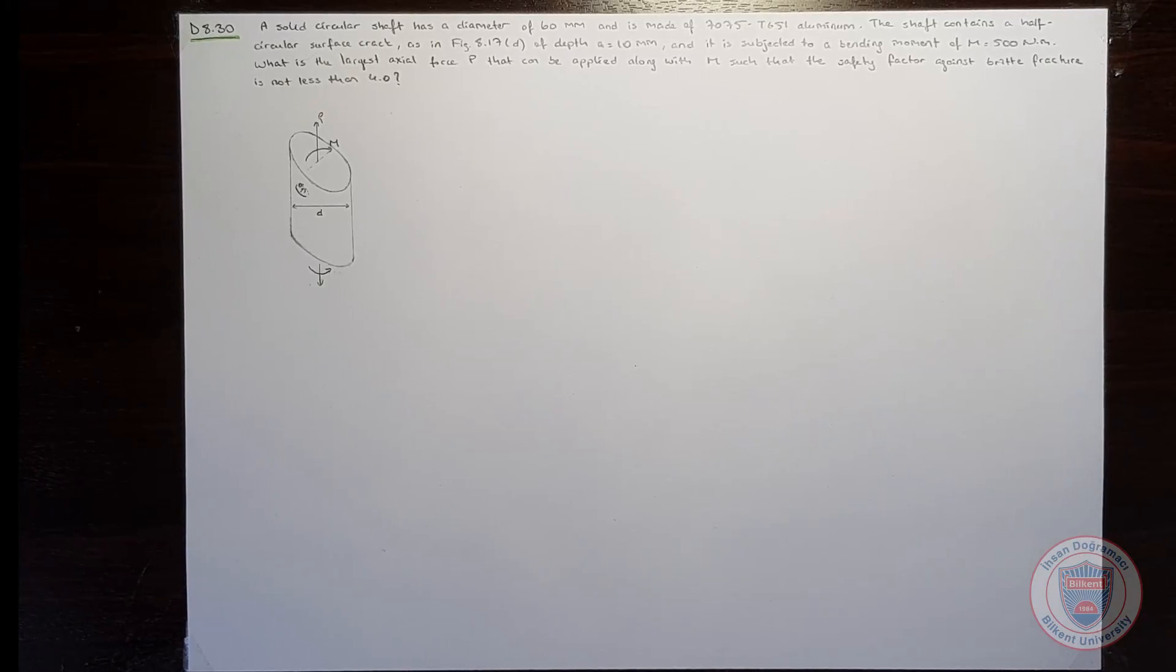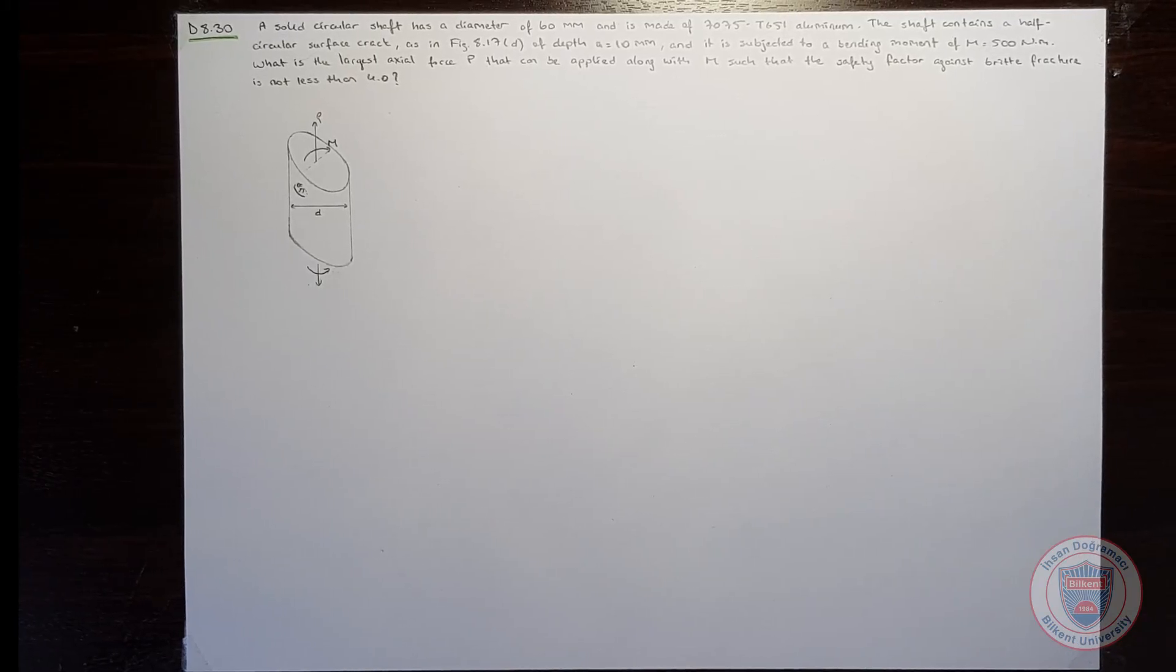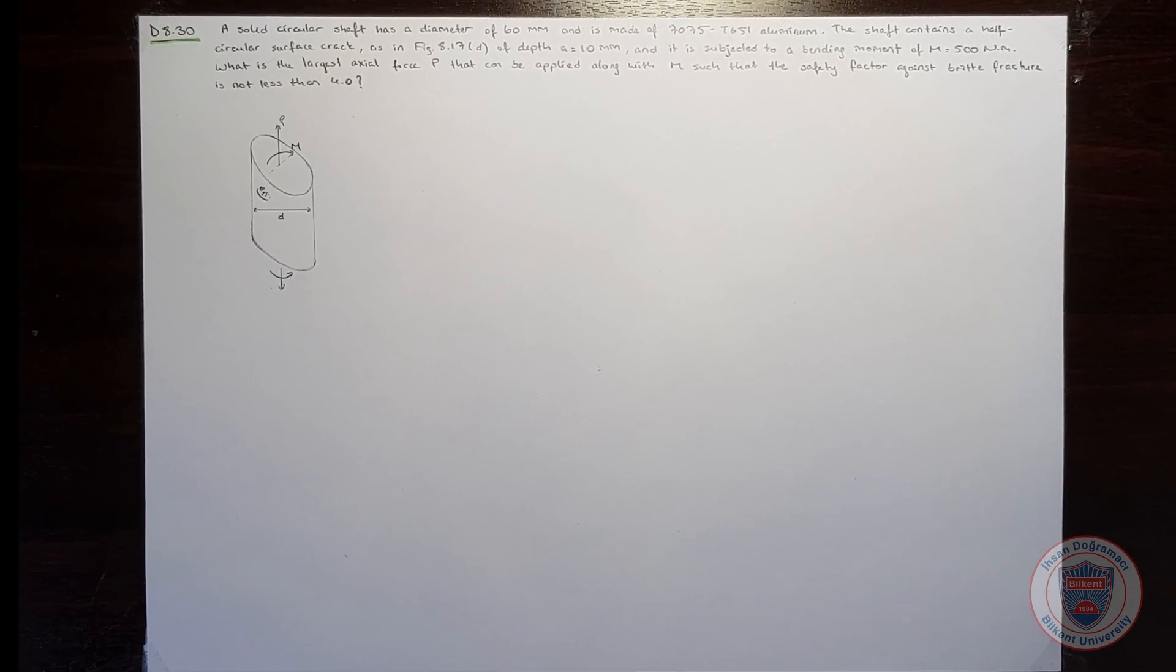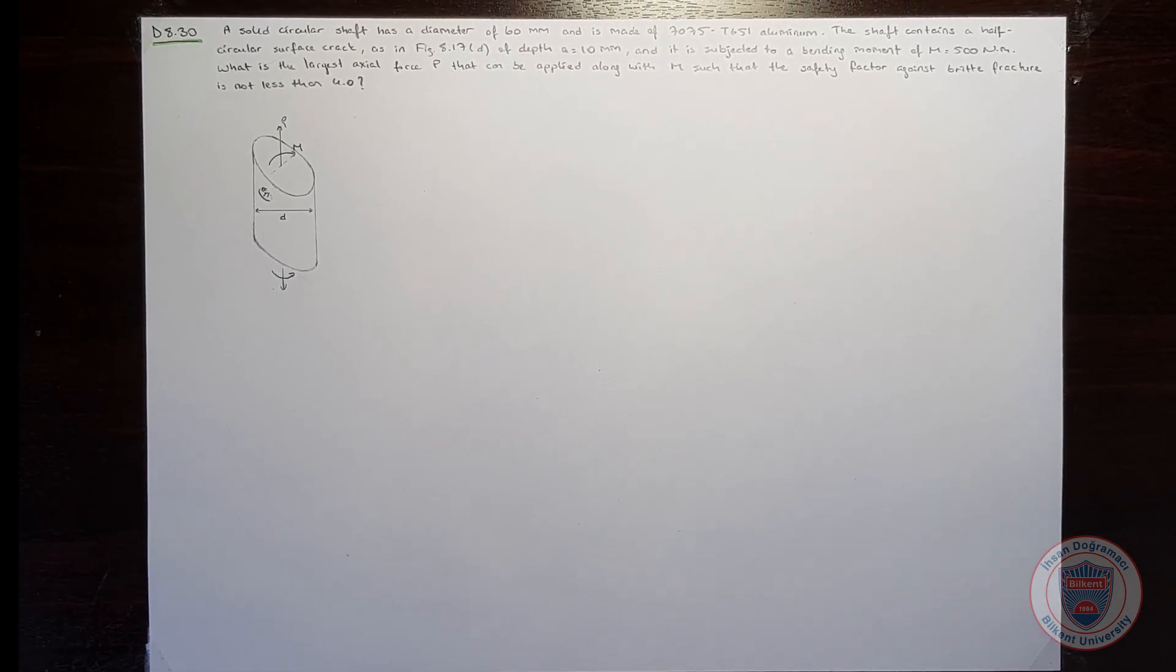We have a solid circular shaft, which is made of 7075 T651 aluminum, and the shaft contains a whole circular surface crack.